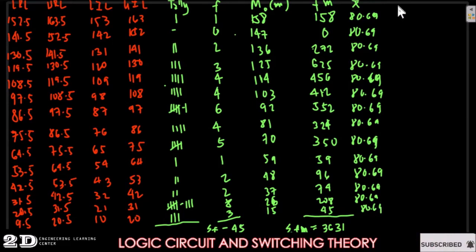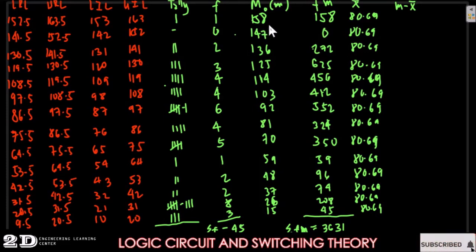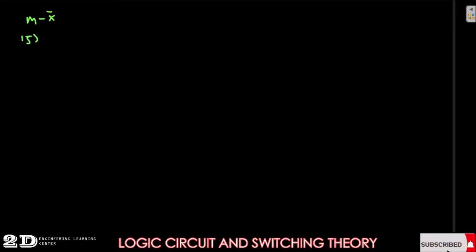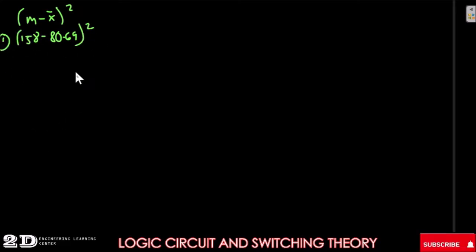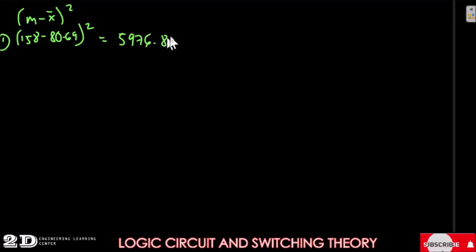Now we will compute the midpoint minus the mean. For the first interval the midpoint is 158, so we calculate 158 minus 80.69, and then we square that result. So 158 minus 80.69, that quantity squared, gives us five thousand nine hundred seventy-six point eighty-four.